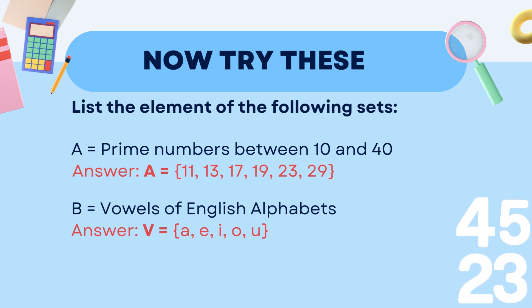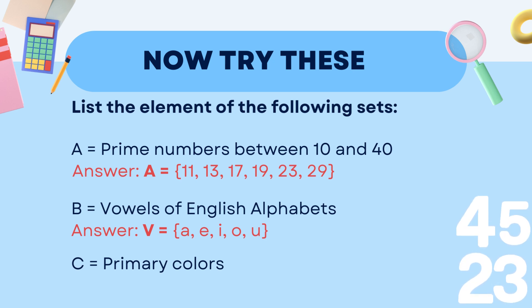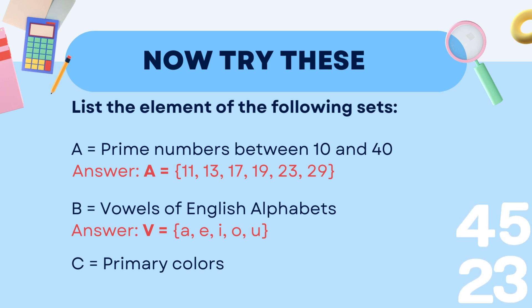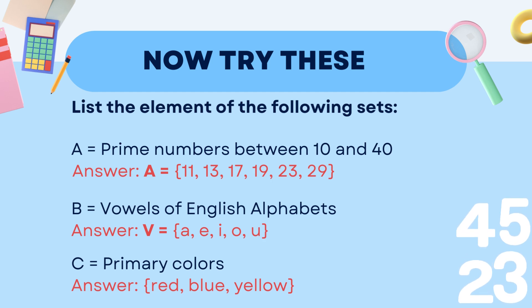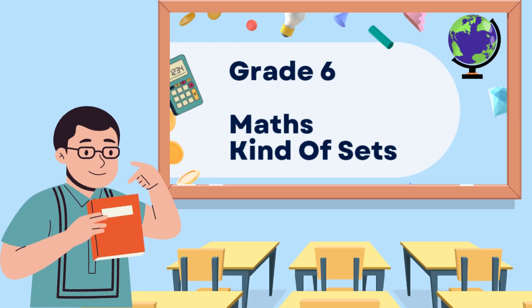For set C, it's asking to list down the primary colors. So the elements of set C are: red, blue, and yellow. Thank you so much and I hope this helped you in understanding what sets are.